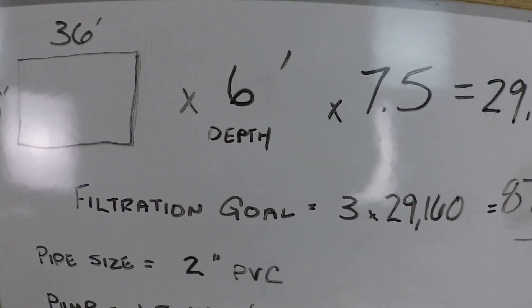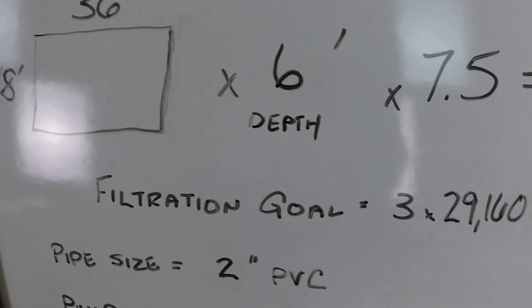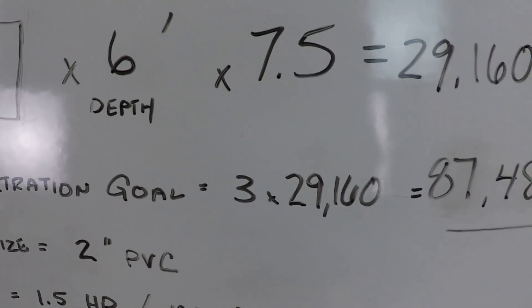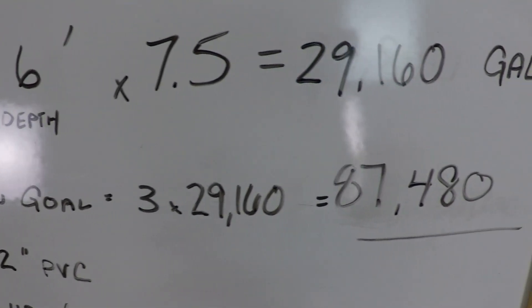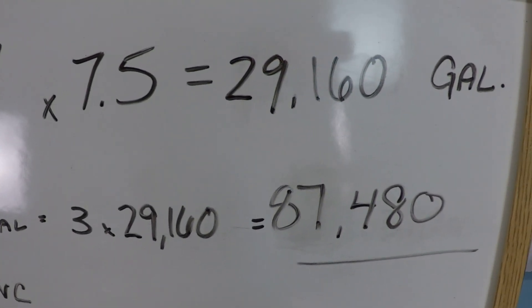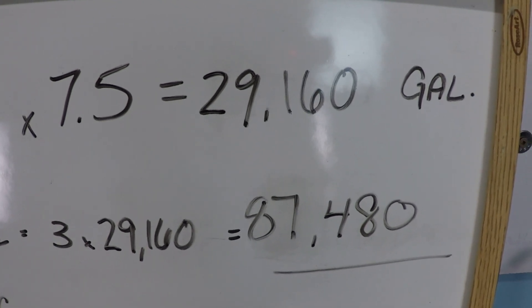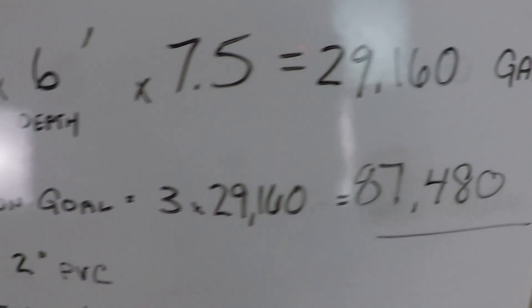Our filtration goal for this variable speed pump schedule that we're setting up is ideally going to be 3 times the volume of the pool to ensure that we filter at least 95% of all of the water in the pool at least one time.